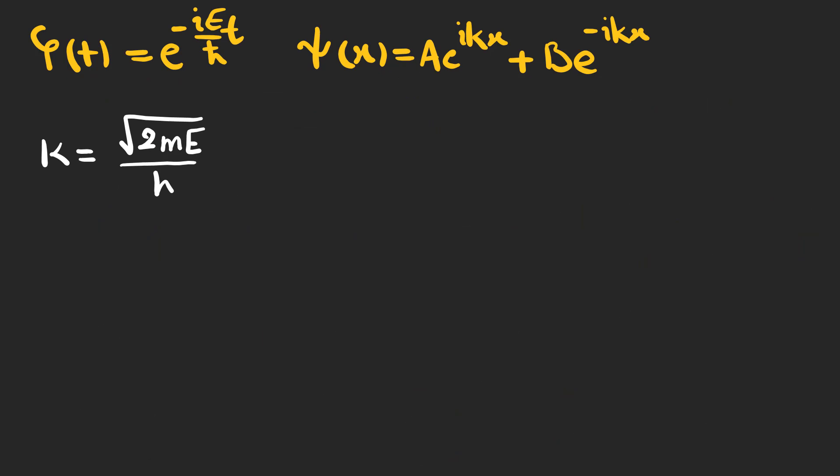Pay attention that E is positive and the energy can carry any positive value because there are no boundary conditions to restrict k and E. Let's rewrite E as k squared h bar squared over 2m.